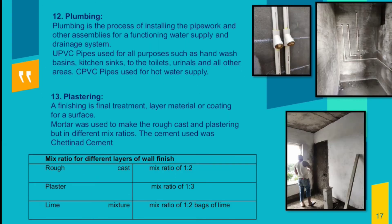Plumbing is the process of installing pipework and other assemblies for a functioning water supply and drainage system. U-PVC pipes were used for all purposes such as hand wash, basin, kitchen sinks, toilets, urinals, and other areas. C-PVC pipes were used for hot water supply. Plastering: a finishing is the final treatment layer or coating for a surface. Mortar was used to make the rough cast and plastering at different mix ratios. The cement used was Chaitinan cement.